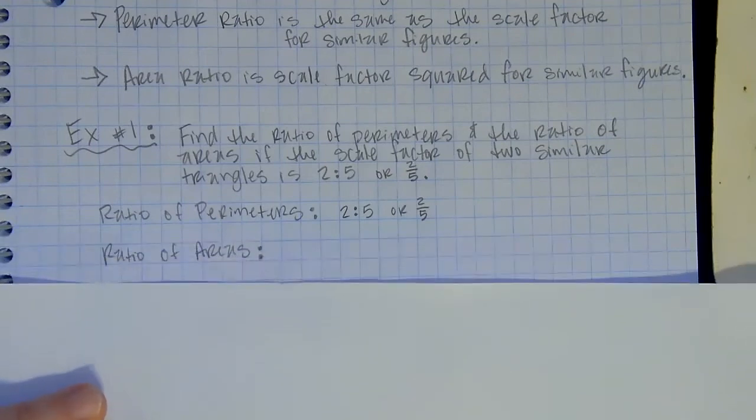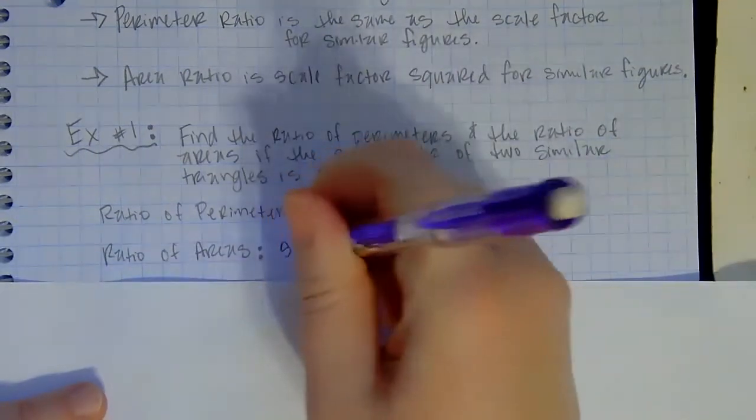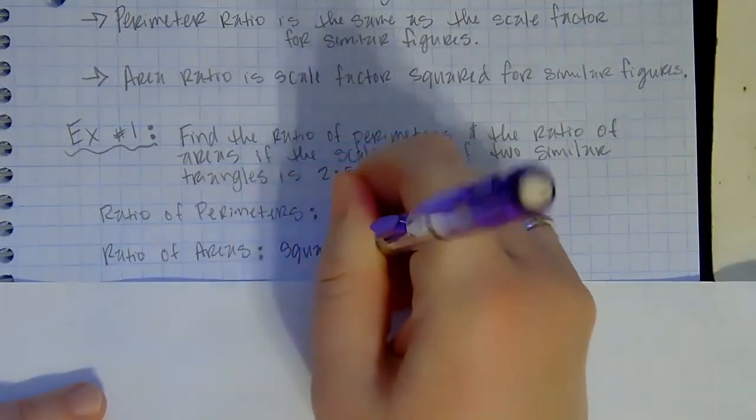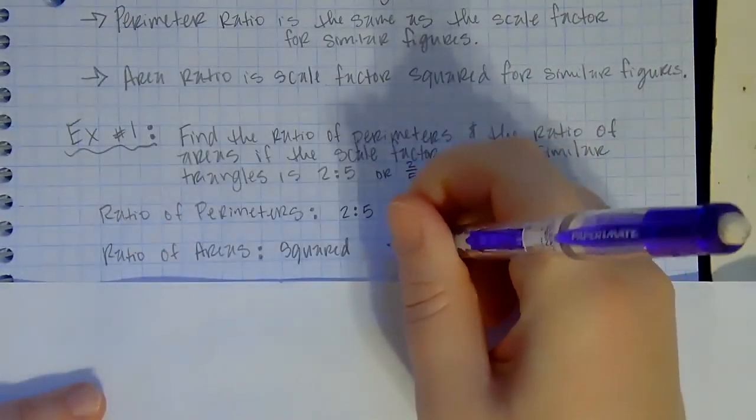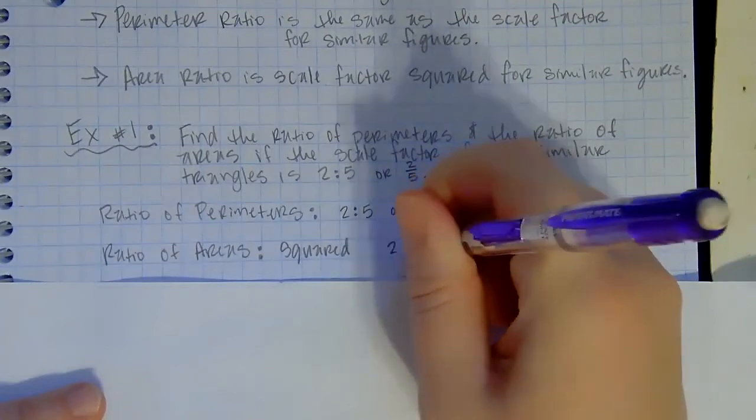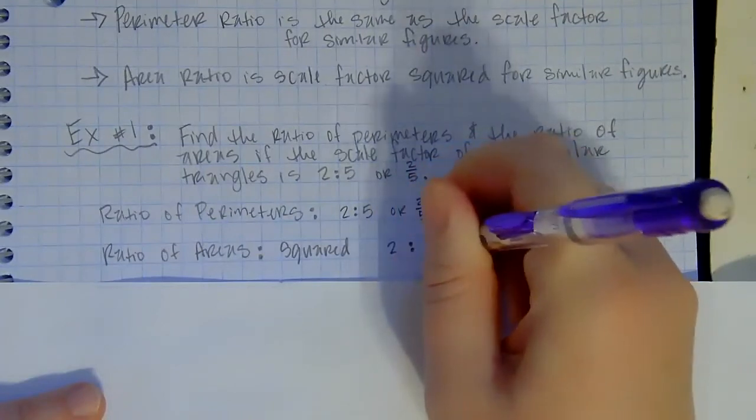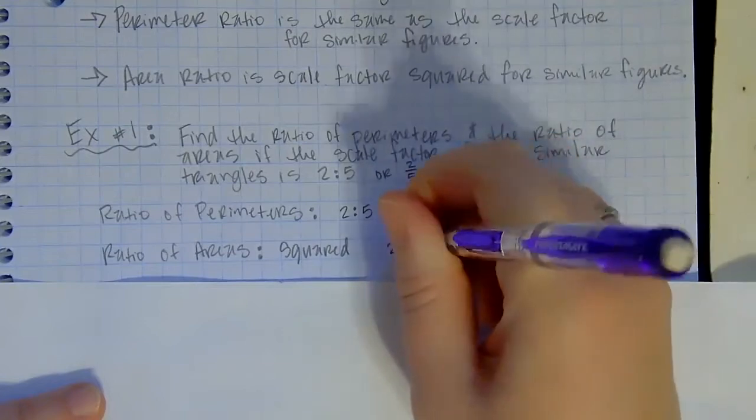Now our ratio of areas, remember, is squared. So I would have to do my scale factor two to five, but I'm going to have to square it.